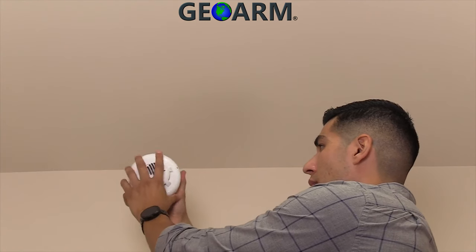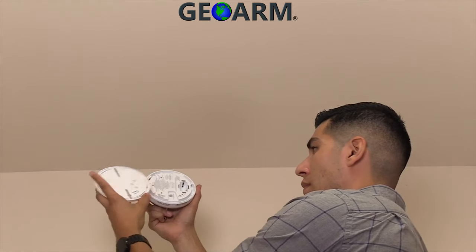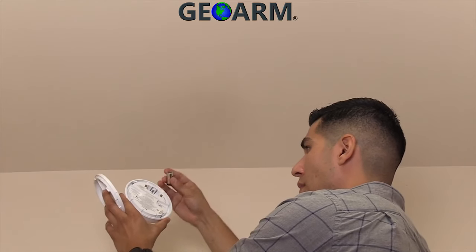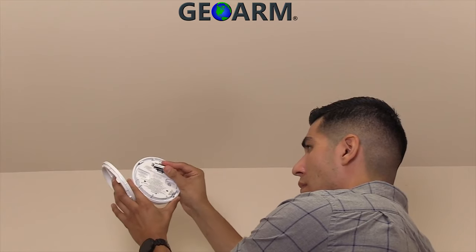With the CO detector facing you, twist the mounting base on the bottom clockwise to separate the detector from the mounting base. Once you have selected the mounting location,